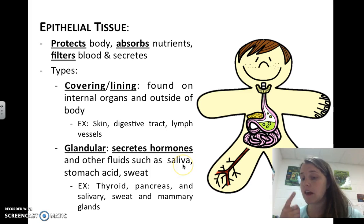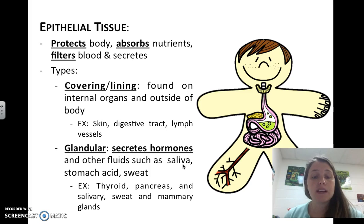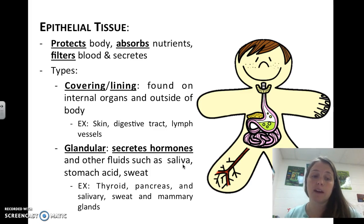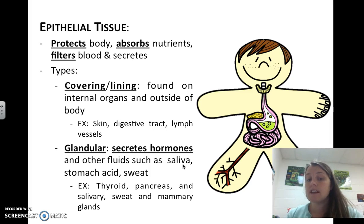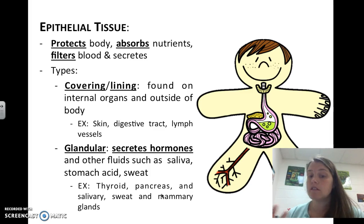Glandular epithelial tissue secretes hormones and other fluids such as saliva. When you get saliva in your mouth, that comes from your glandular epithelial tissue. Stomach acid is produced by glandular epithelial tissue, and so is sweat when you're working really hard. Examples of organs that do this are your thyroid, your pancreas, your stomach, your salivary glands in your mouth, your sweat glands, and your mammary glands — which allow women who are breastfeeding to secrete breast milk.